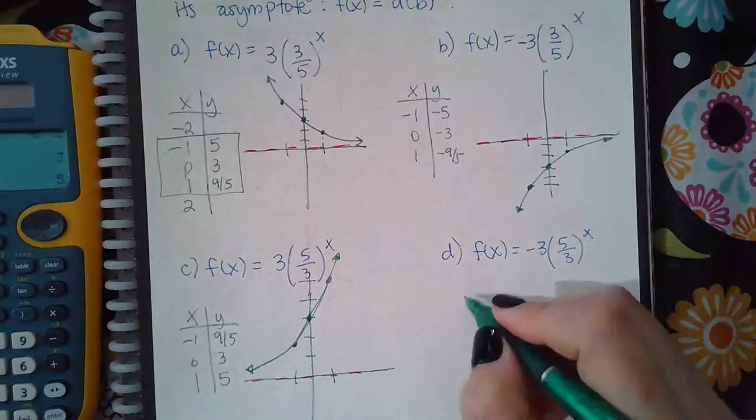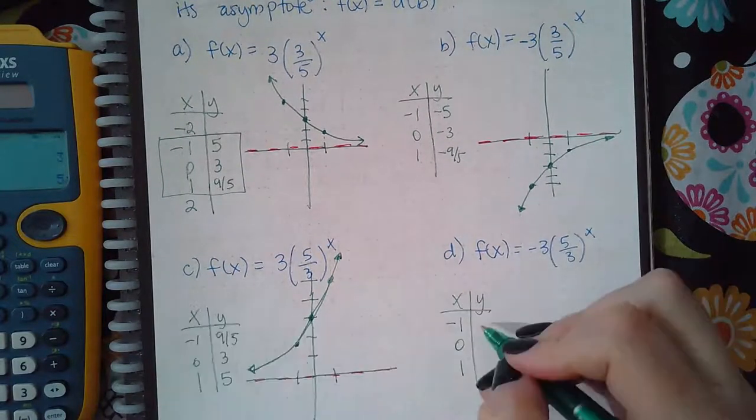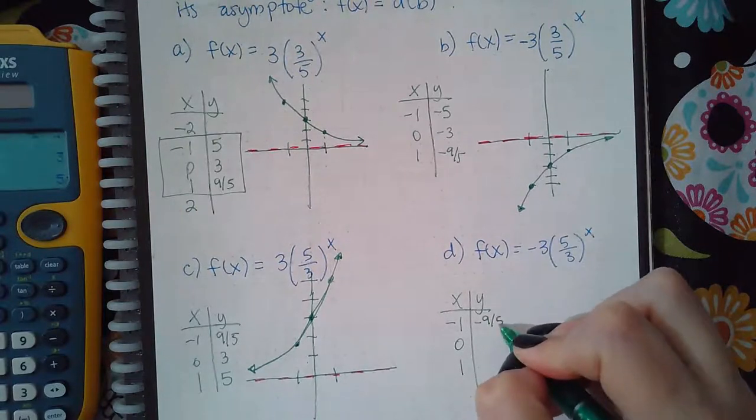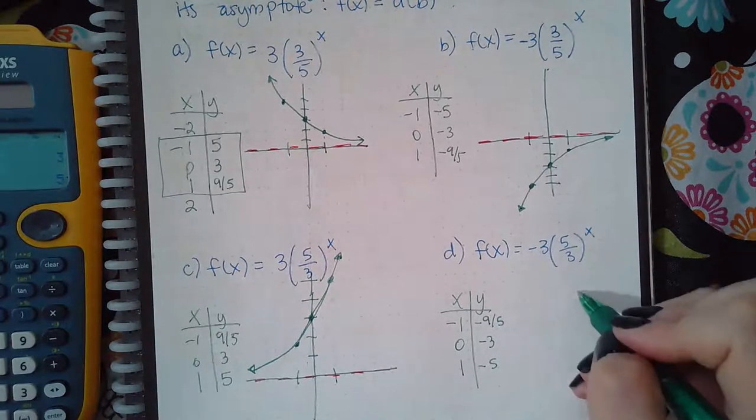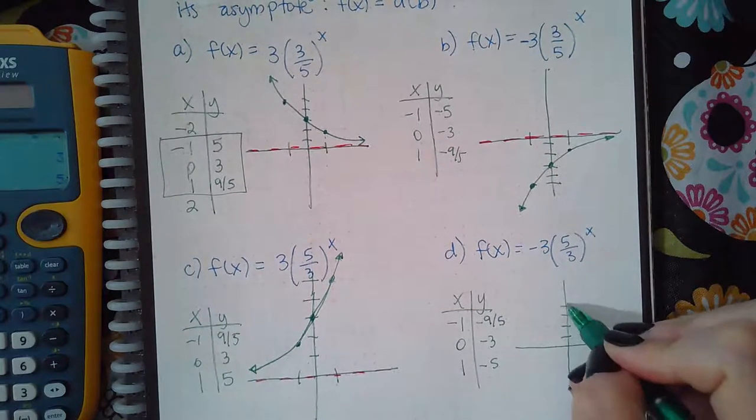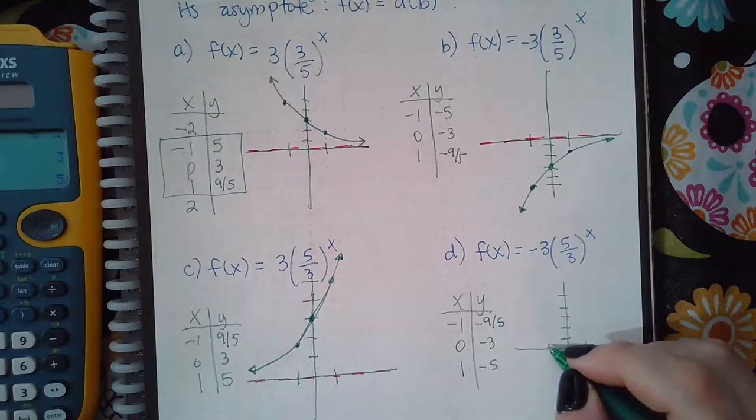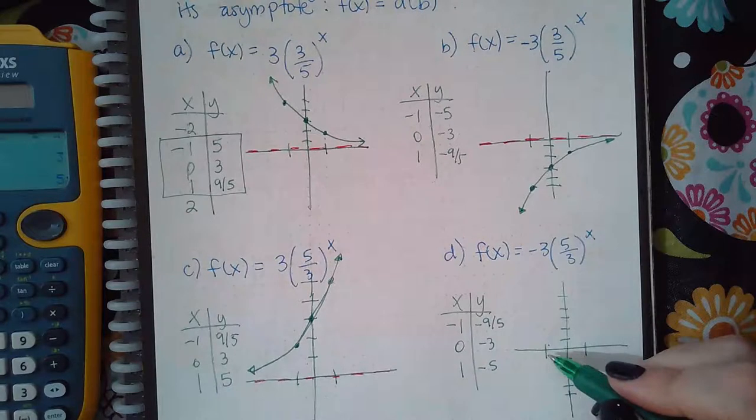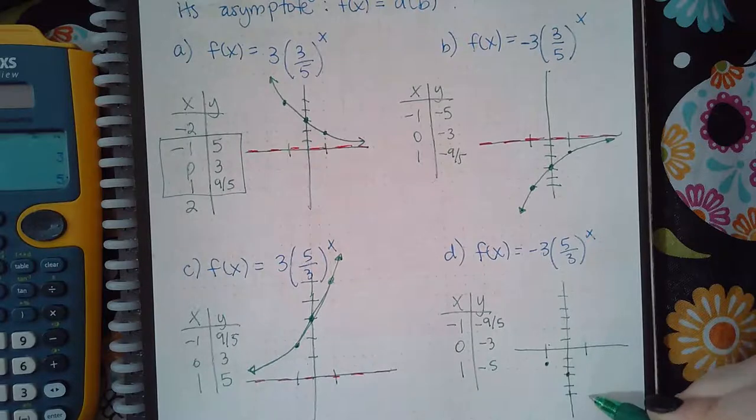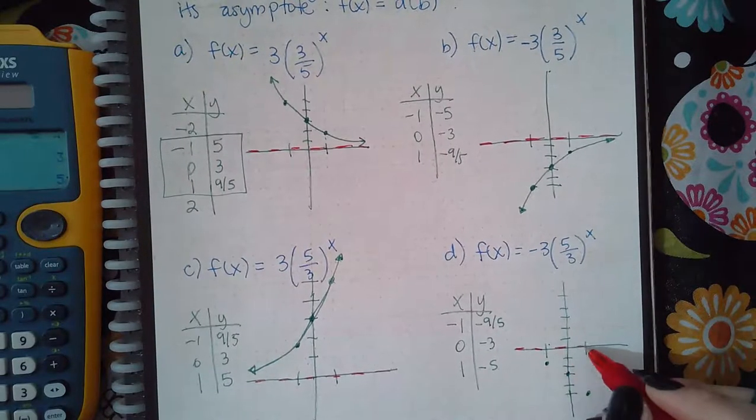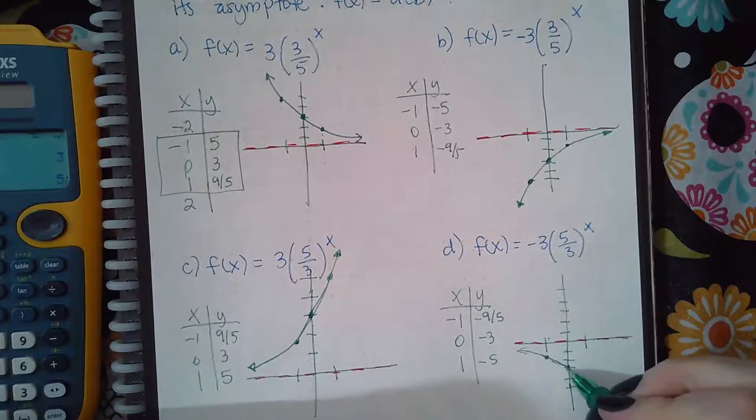Now over here, do the table again. So negative one, zero, one. And when I plug in these values into the calculator, I get negative nine fifths, I get negative three and negative five. So if I draw this, I have negative one and negative one and four fifths, zero and negative three, and then one and negative five. My asymptote is still on the x-axis and then it trails off going this way and going this way.